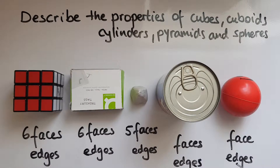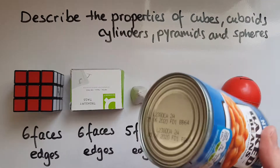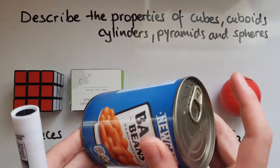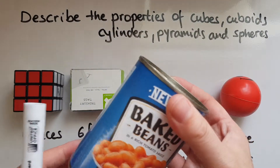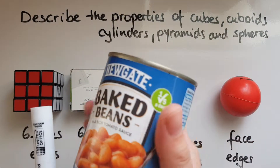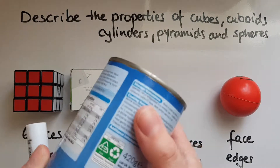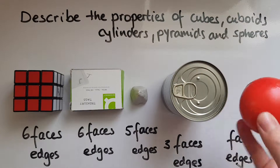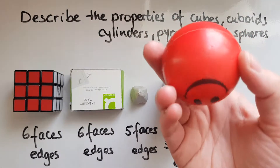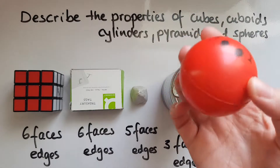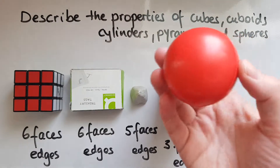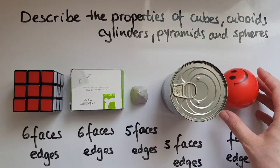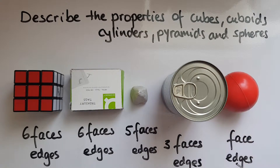What about the cylinder? We can see two of them — one at the bottom and one at the top — and there is one that goes around. So there are three faces in total. For a sphere, there is one face that goes around and continues throughout the whole shape, so there is one face.